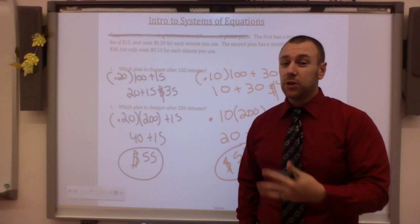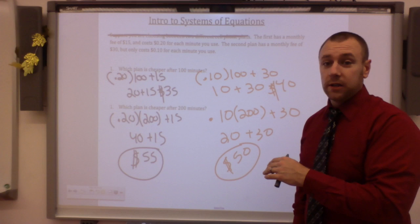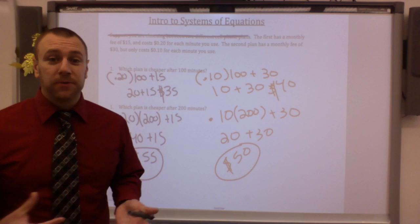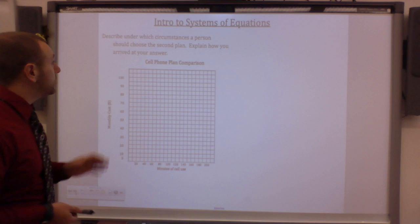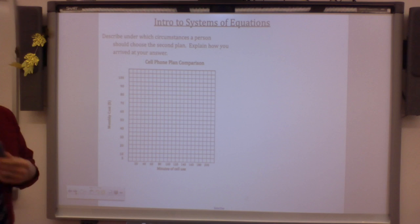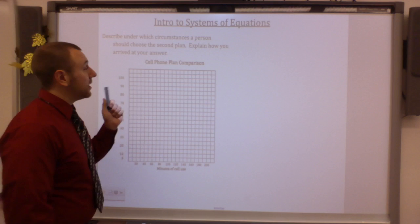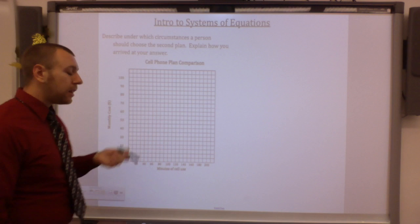So the question comes, which one is cheaper? And where is the break-even point for both of these functions? And that's a system of equations. So now let's get into what a system of equations is. In this topic, we're going to be discussing how to graph. So the question is, describe under which circumstances a person should choose the second plan. Well, right now we know that the second plan is cheaper at 200 minutes, but it's not cheaper at 100 minutes. So we're going to use a graph to figure that out.